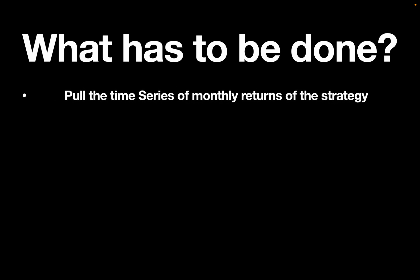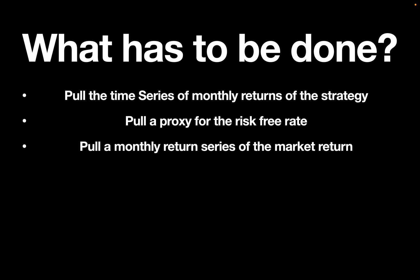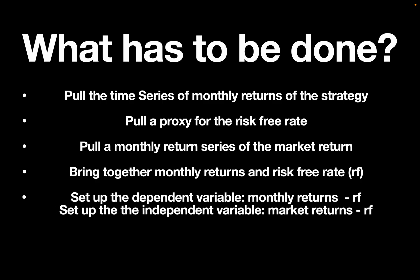You have to pull the time series of monthly returns of the strategy. Then you have to pull a proxy for the risk-free rate, e.g. a treasury bond. Then you have to pull a monthly return series of the market return. And then you have to bring together the monthly returns and risk-free rate. Then you set up the dependent variable, so monthly returns minus risk-free rate, and you set up the independent variable, market returns minus risk-free rate.